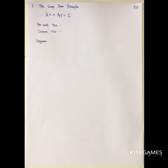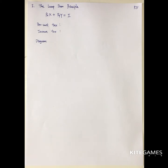Next we will talk about the lump sum principle. The lump sum principle says that the income tax is always preferred to the per unit tax if the tax amount is the same from the perspective of the consumers. That means consumers always prefer the income tax rather than a tax on specific goods.